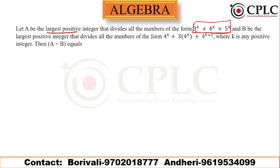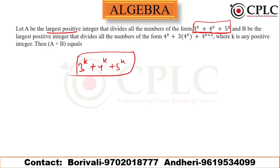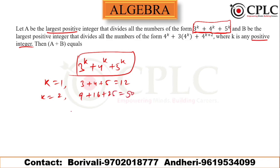To find the largest positive integer that divides all numbers in the form 3^k + 4^k + 5^k, we essentially need their HCF. Since k is a positive integer, substituting k=1 gives 3 + 4 + 5 = 12. Substituting k=2 gives 9 + 16 + 25 = 50. Substituting k=3 gives 27 + 64 + 125 = 216. The HCF of 12, 50, and 216 is 2.